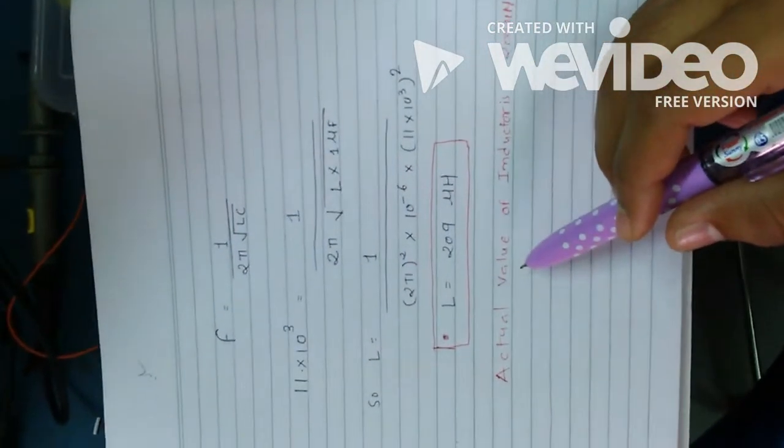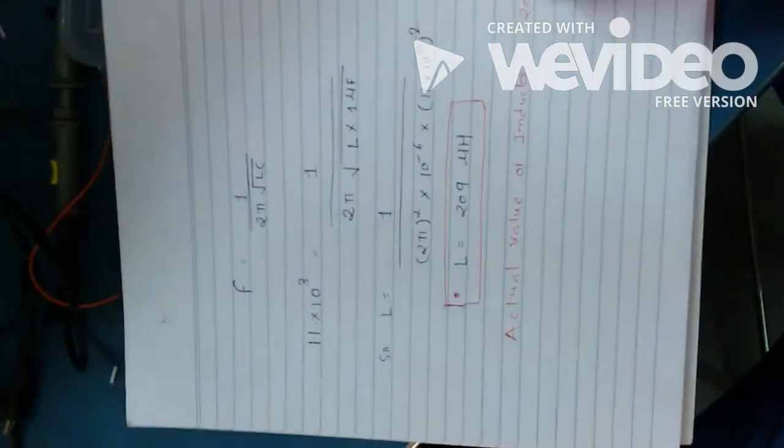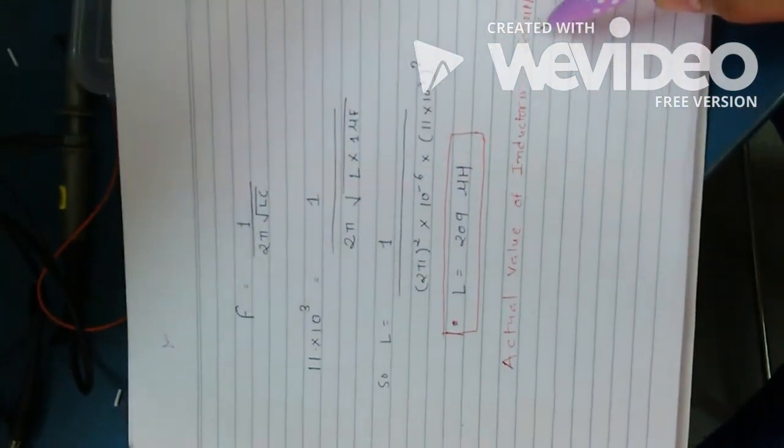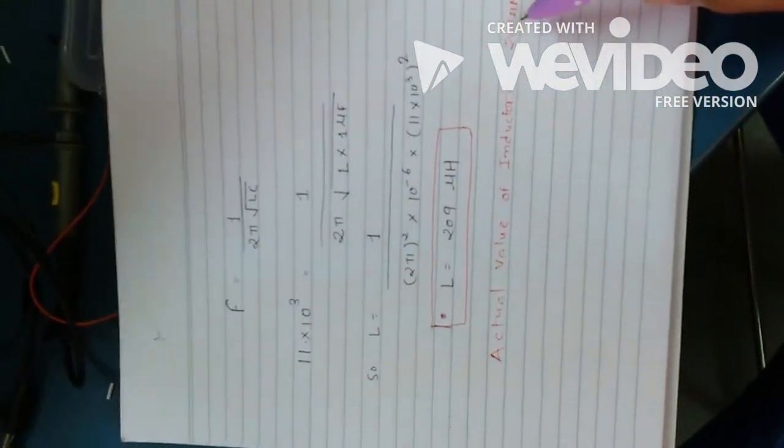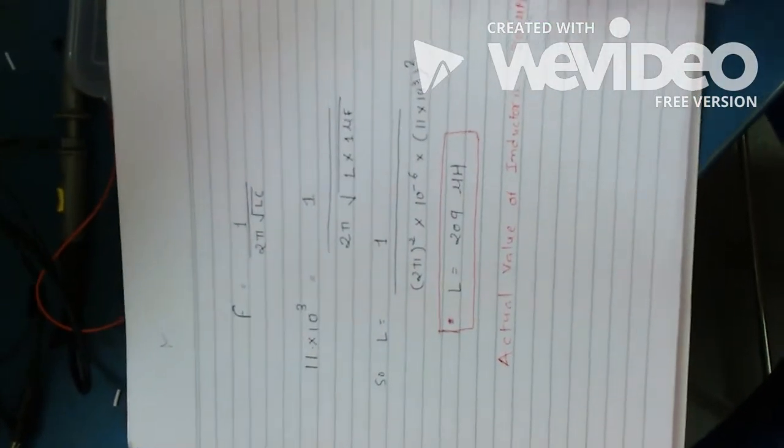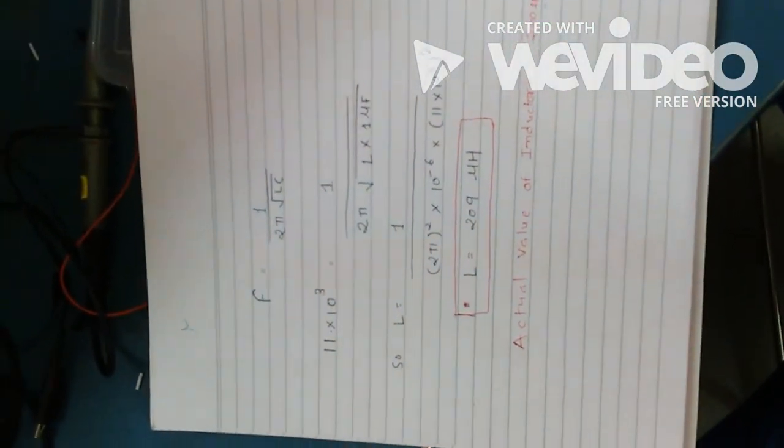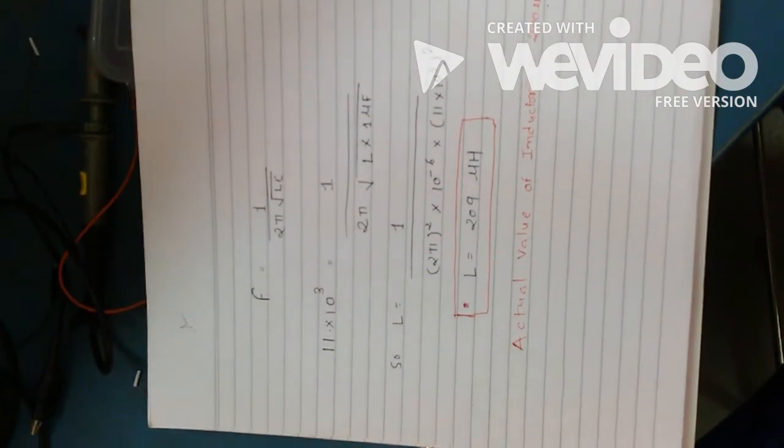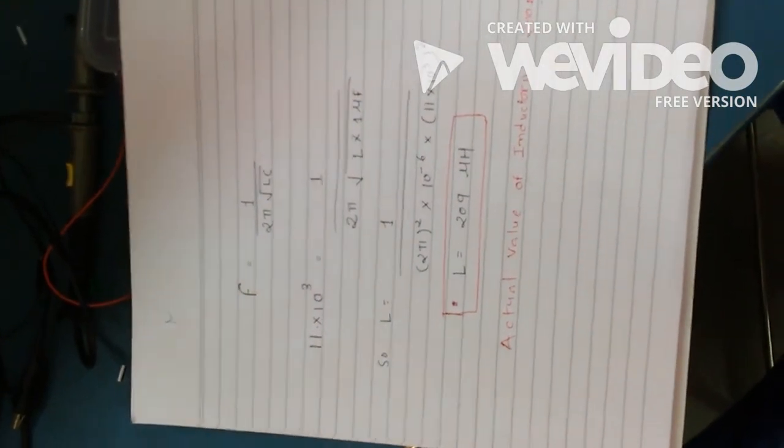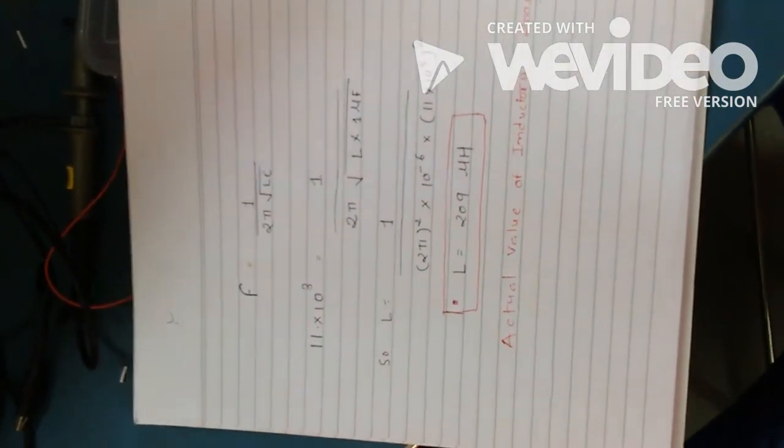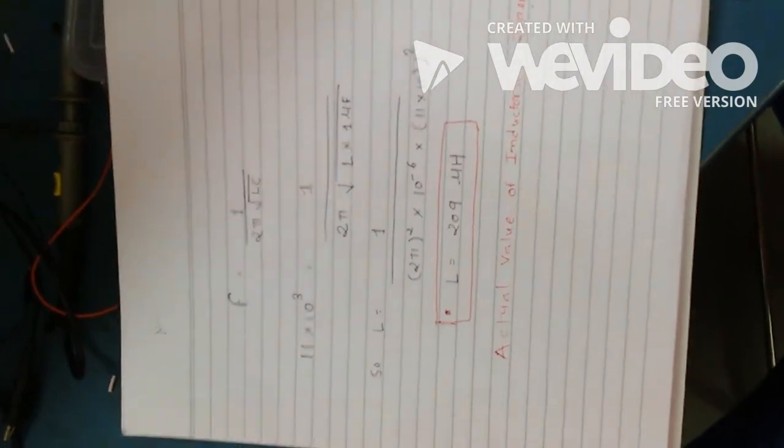The actual value of the inductor is 200 microhenry, which we have found based on turns, wire gauge, and different other parameters. It is approximately near to the calculated or practically calculated value. So this is one of the simplest methods to calculate the inductor.